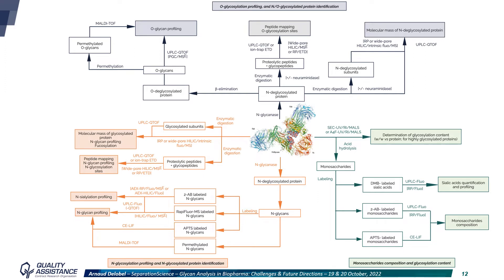This slide presents the different approaches we use at Quality Assistance for glycan analysis, depending on the type of glycans present, the level of analysis, and the information required. These methods are similar to what is listed in several regulatory texts, such as USP 1229, dealing with the analysis of recombinant mAbs; USP 1084, on glycoprotein and glycan analysis; or European Pharmacopeia 2.2.59, on glycan analysis. The analysis can be done at the protein level, at the oligosaccharide level as proposed in USP 212, or at the monosaccharide level as described in USP 210.